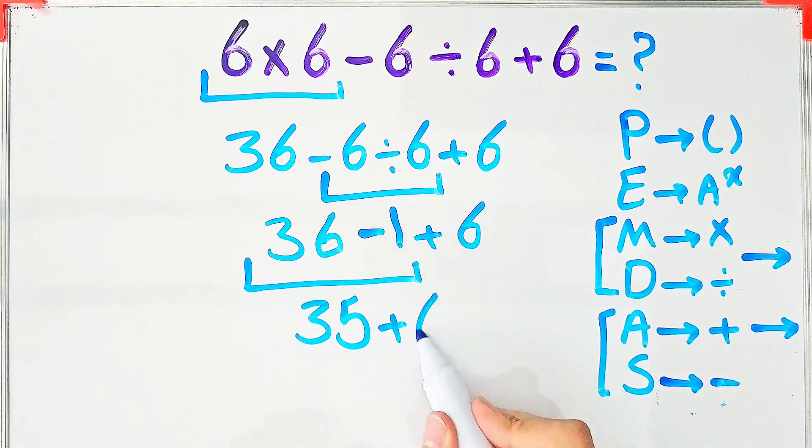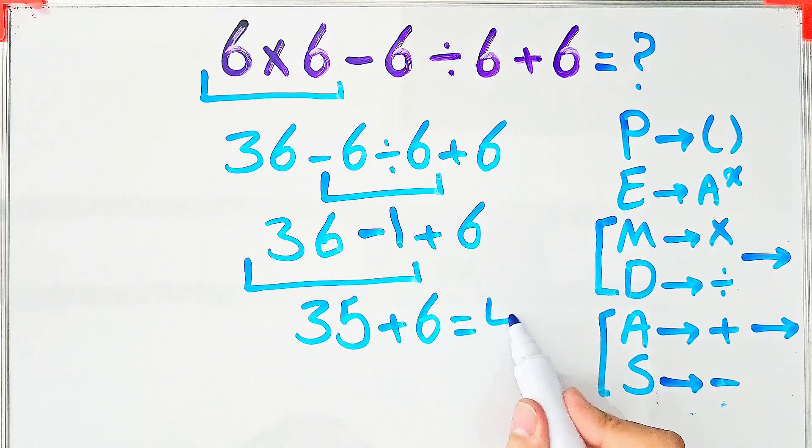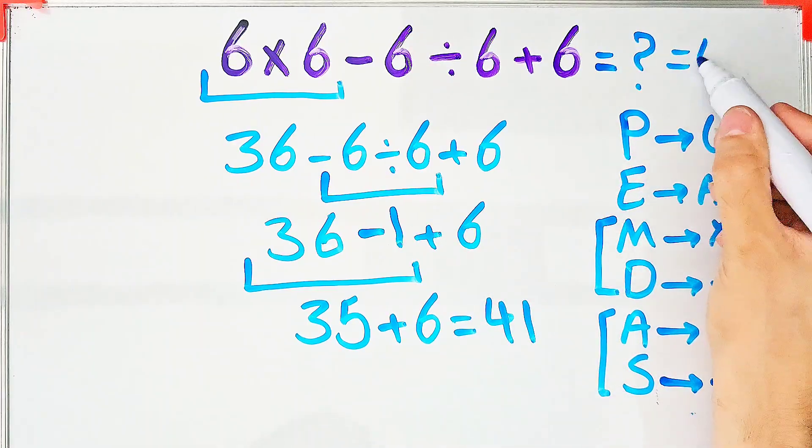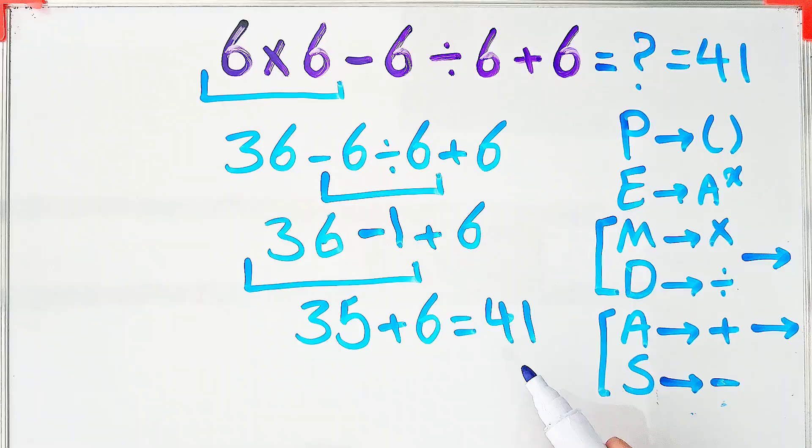And 35 plus 6 equals 41. The final answer of this question equals 41. To see more math videos, subscribe to the channel. Goodbye.